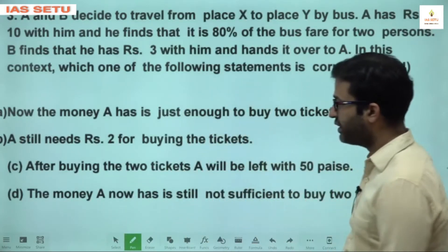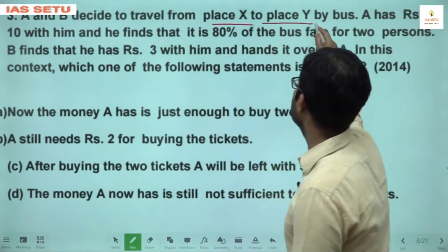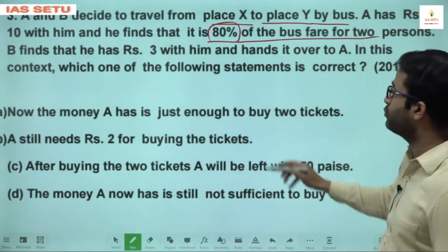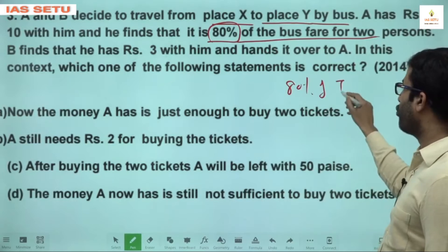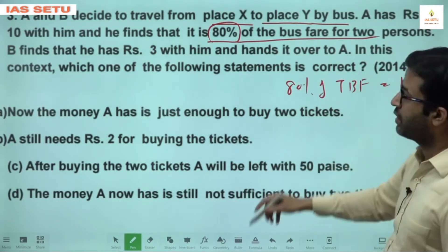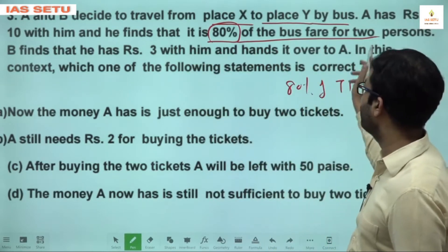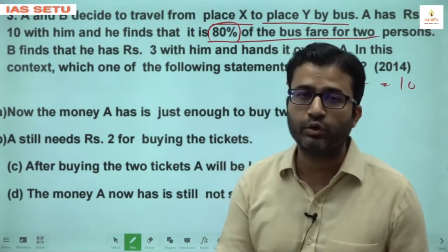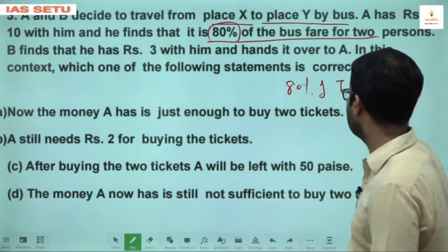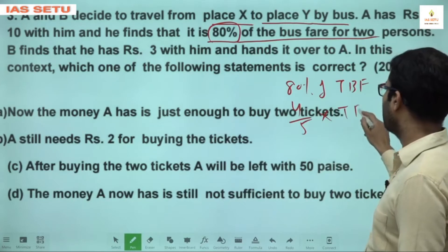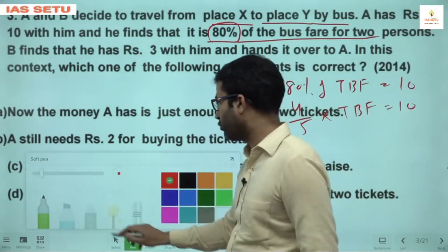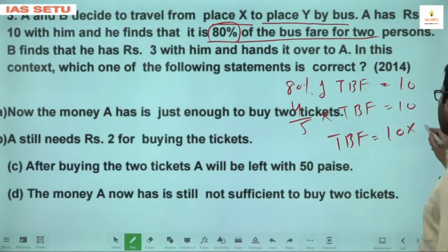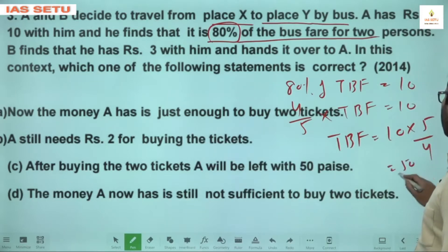Question 3: A and B decide to travel from place X to place Y by bus. A has Rs. 10, which is 80% of the bus fare for 2 persons. So 80% of total bus fare = Rs. 10. That means (4/5) × total bus fare = 10, so total bus fare = 10 × (5/4) = Rs. 12.50.